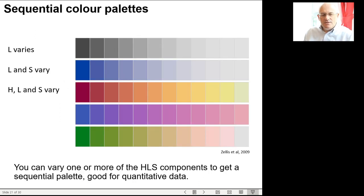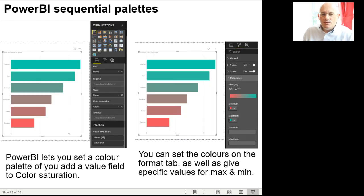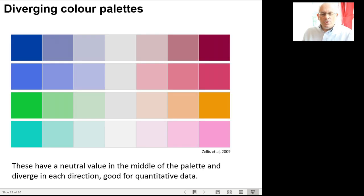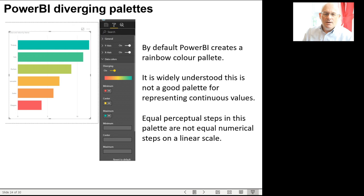It's quite common to use sequential color palettes, varying one or more of the HLS components to get a nice sequential palette. That can be good for quantitative data where you want equal steps in color change to represent equal steps in value. Power BI lets you do this — you can set up a complex relationship between data and colors based on functions and aggregations, coloring a bar chart on any number in your data set. You can also use diverging color palettes, which are good in maps where you want to separate two zones or two ends of a spectrum very clearly, using a range of blue and a range of red to show something about a neutral middle point.